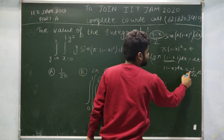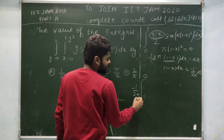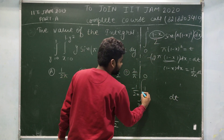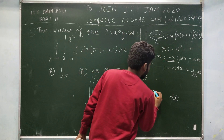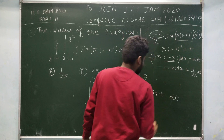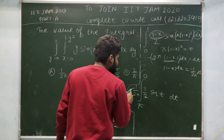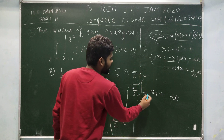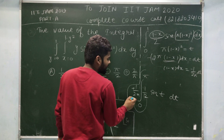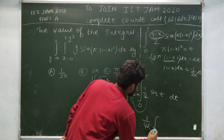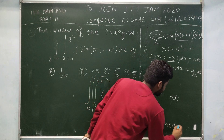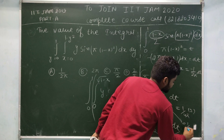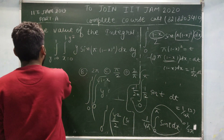So (1-x)dx = -1/(2π) dt. Substituting and using the minus sign to swap the limits from 0 to π, we get (1/2) · (1/(2π)) · integral from 0 to π of sin(t) dt, which equals 1/(4π) · integral from 0 to π of sin(t) dt. The integral of sin(t) from 0 to π is 2, so the answer is 1/(4π) × 2 = 1/(2π). Therefore option A is the correct answer.